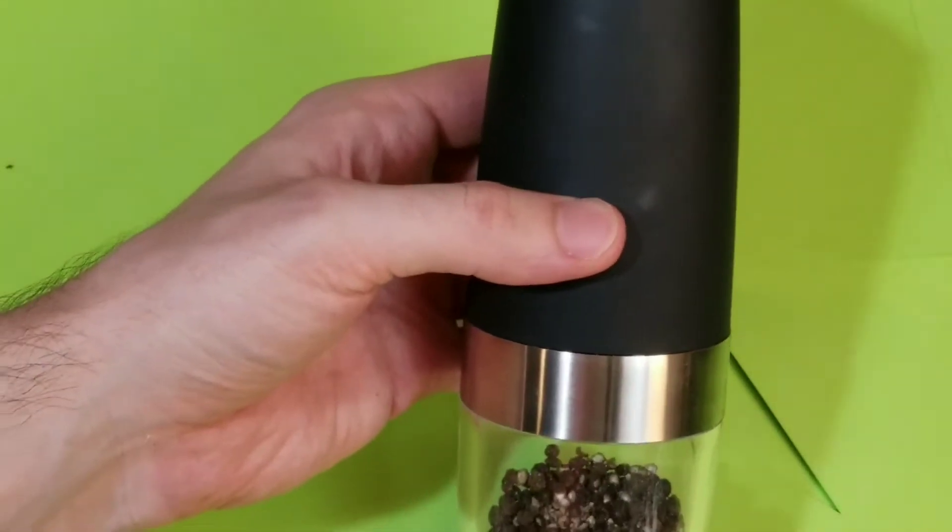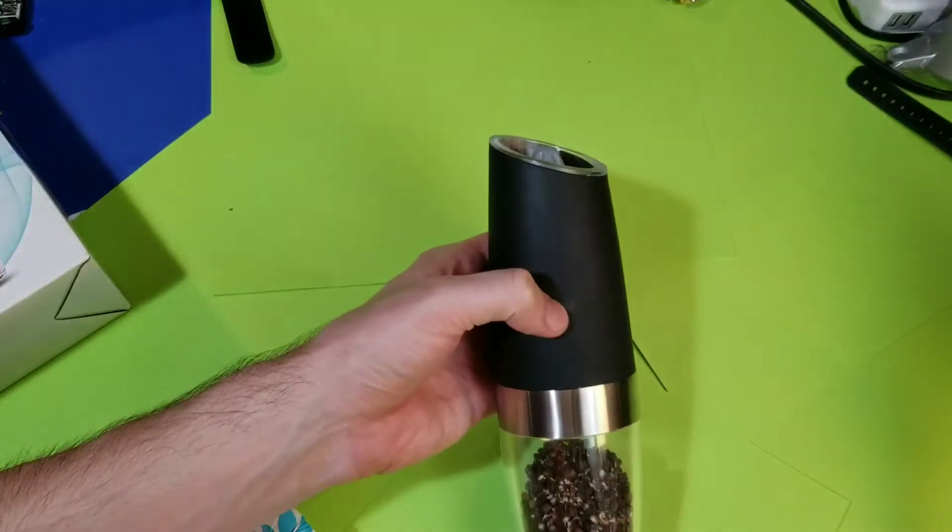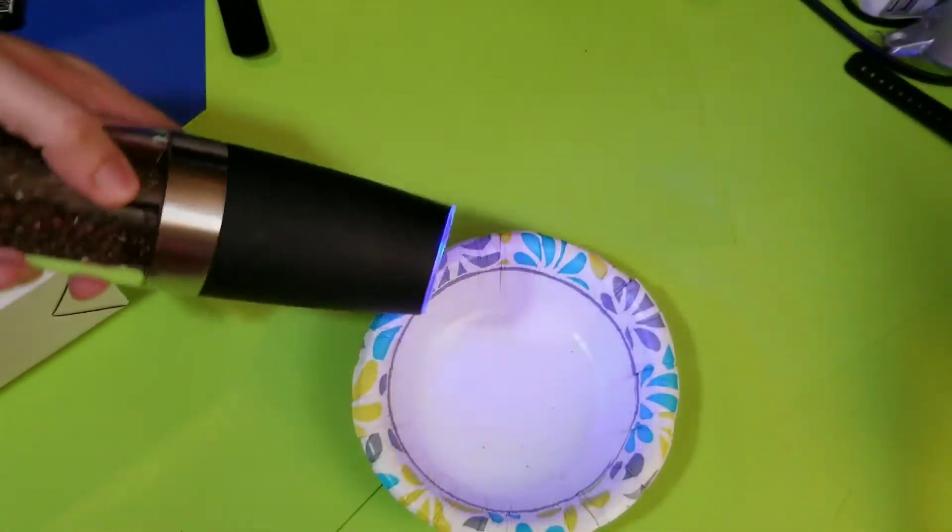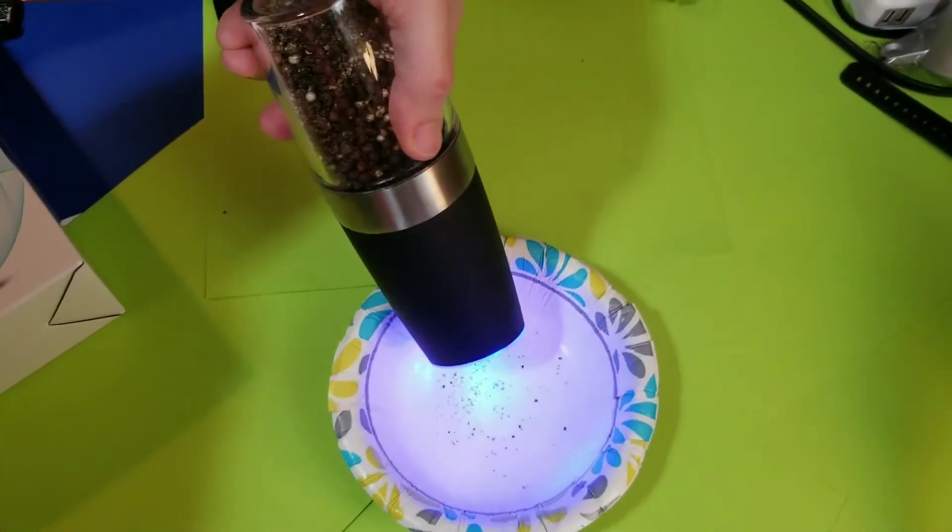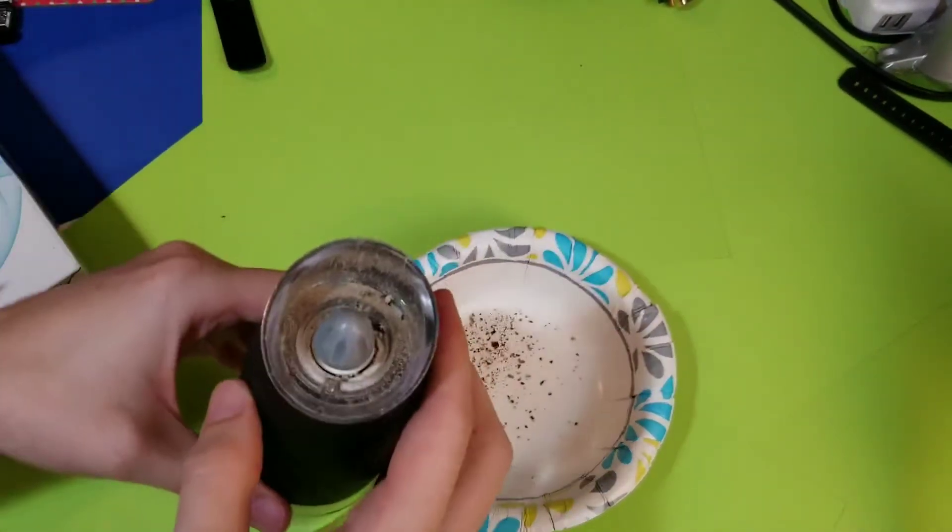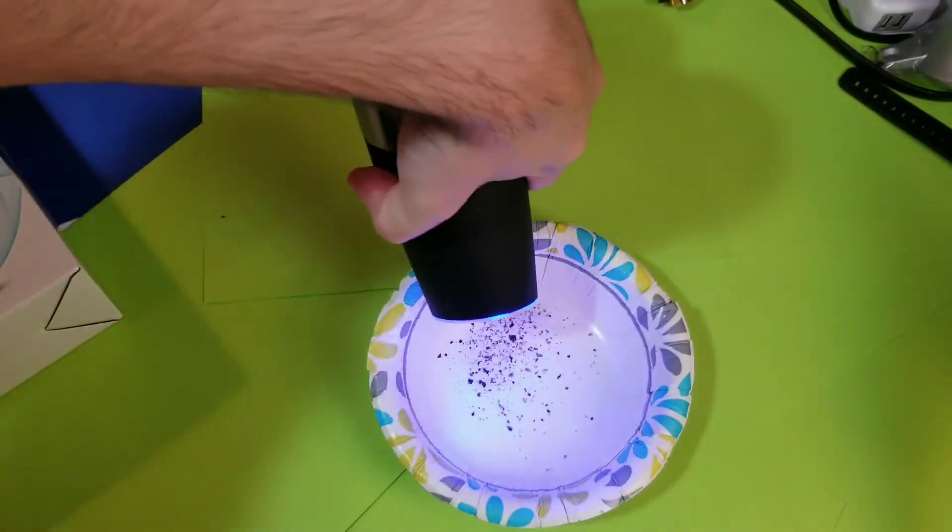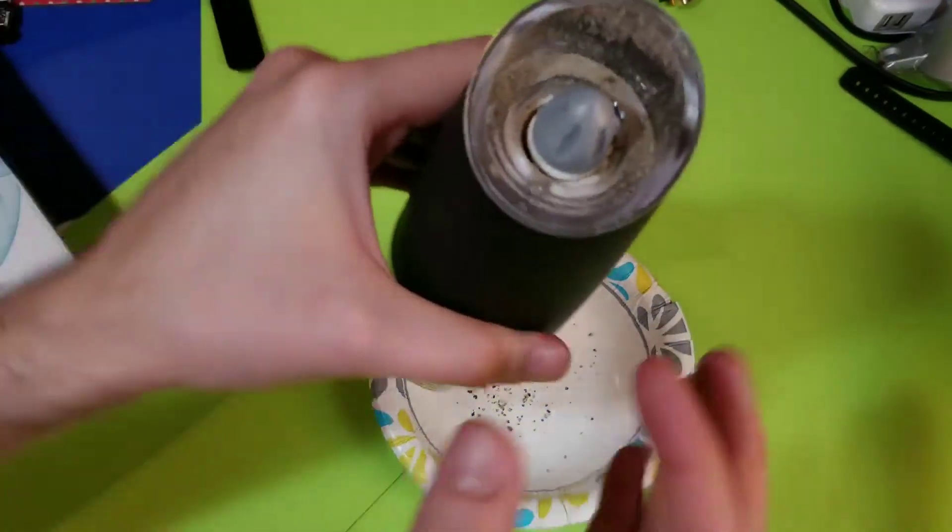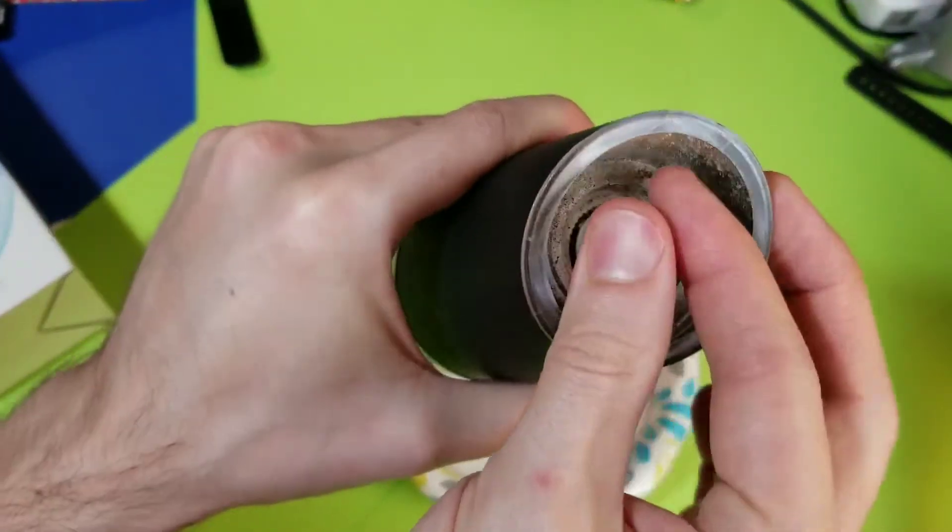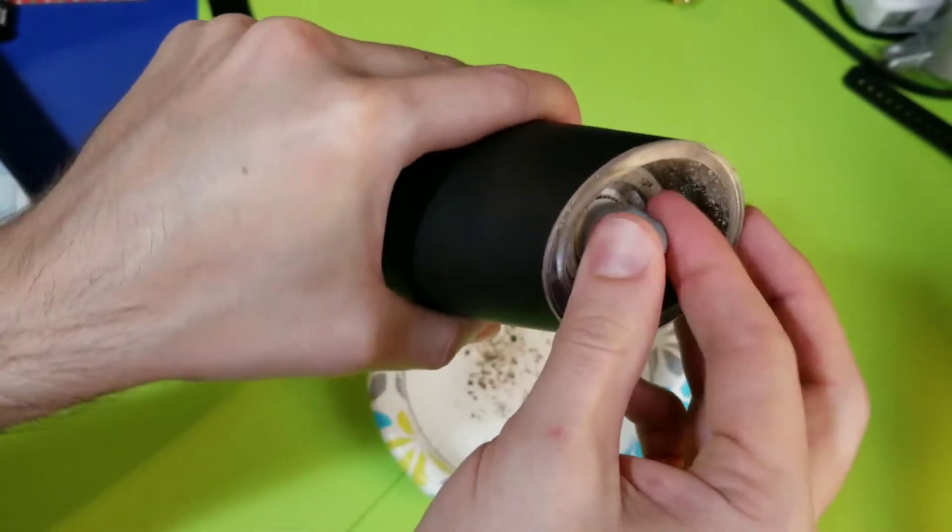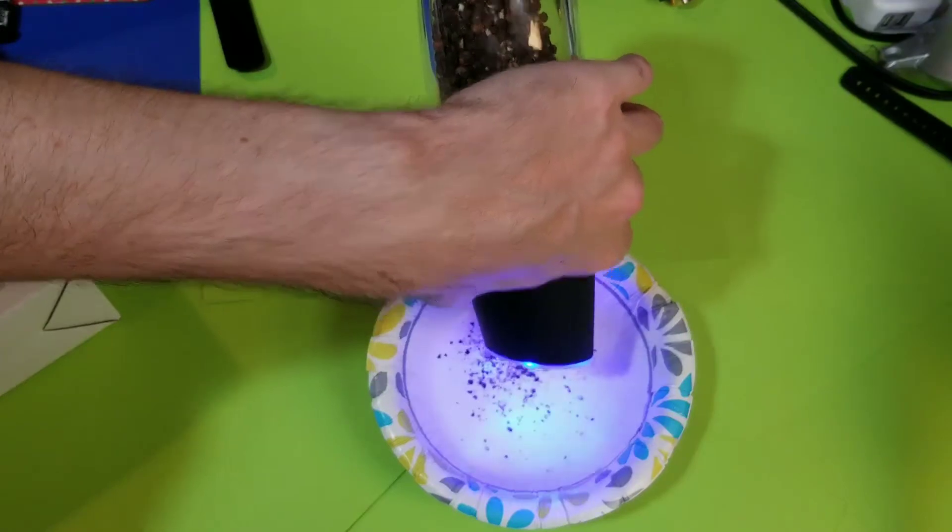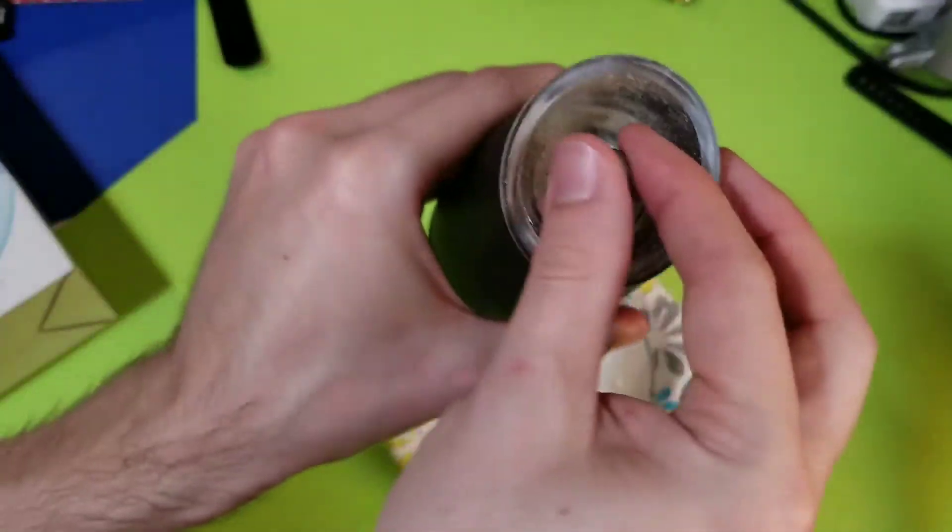Here's my pepper grinder. This is an automatic, gravity-fed pepper grinder. It just works like this. And it turns off automatically when you don't need it anymore. It's got a little ceramic burr grinder in there, kind of tiny. You just adjust the device to get the desired pepper size out of it.